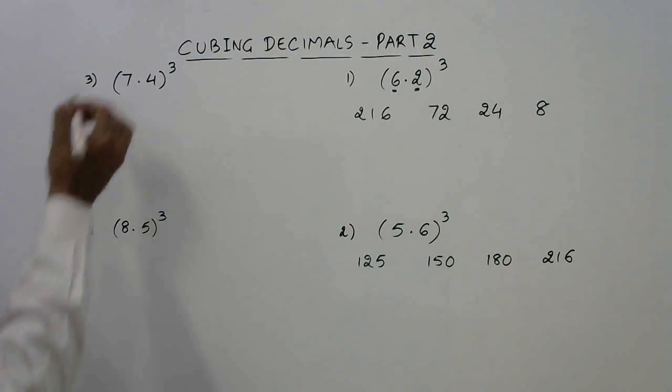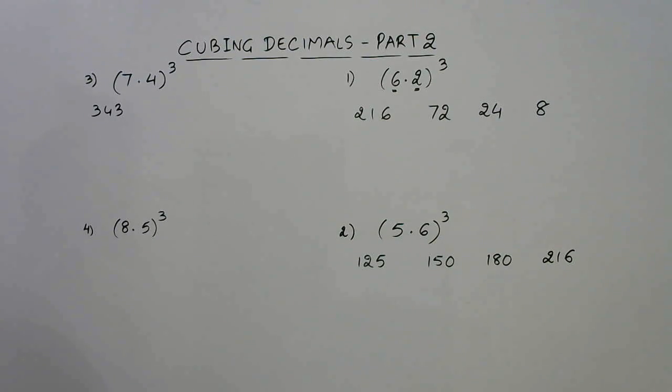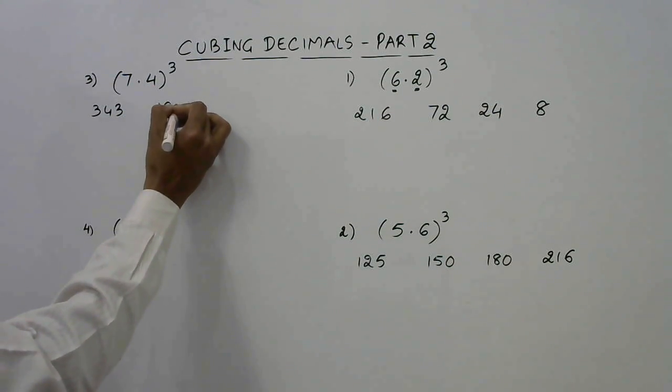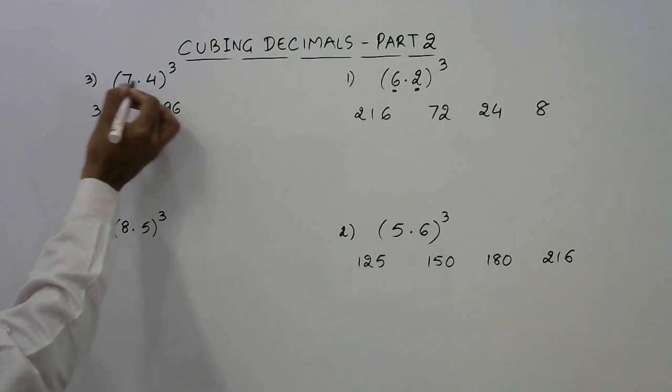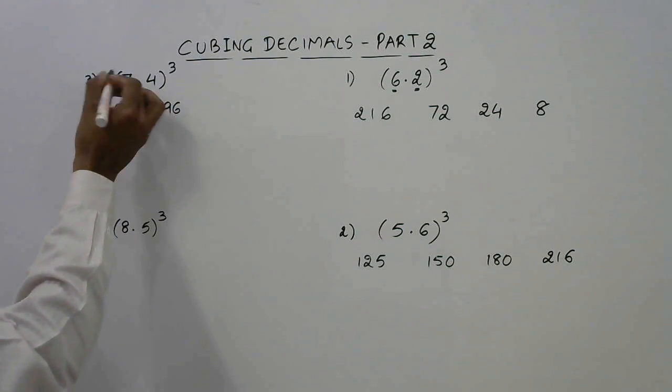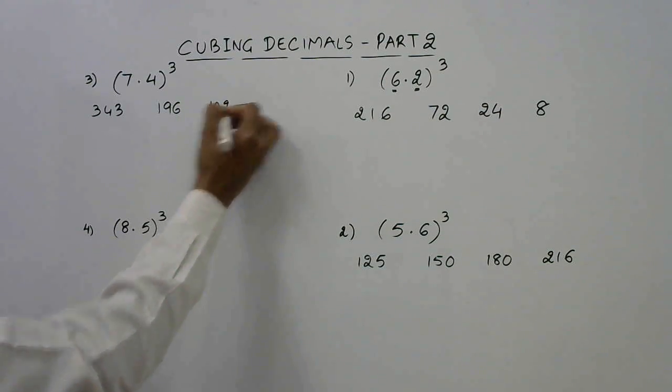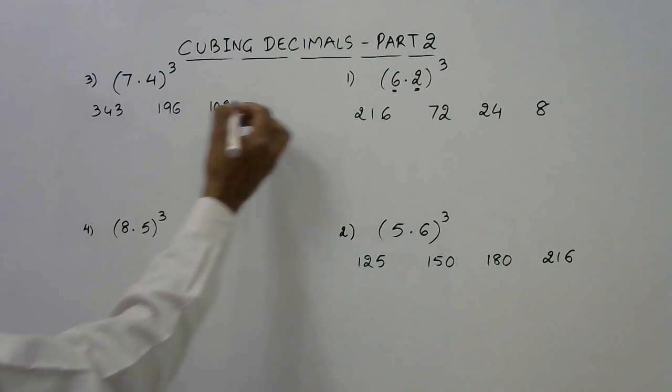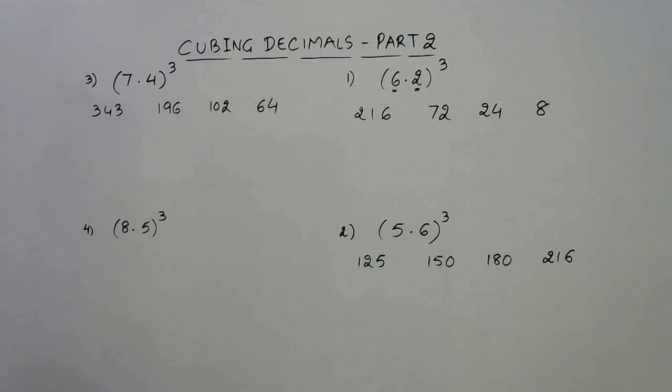Similarly here 7 cube is 343. 7 square is 49, and when you multiply 49 by 4 you get 196. Then 4 square is 16 and 16 into 7, 16 into 5 is 85, so 100 and 2. And then we have 4 cube. Now 4 cube is 64. So these are the 4 numbers in this question.